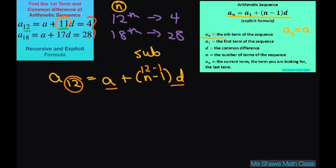Now let's write this out. a plus 11d equals 4 and a plus 17d equals 28. I have a system of linear equations. Remember arithmetic sequences are linear because of the common difference.